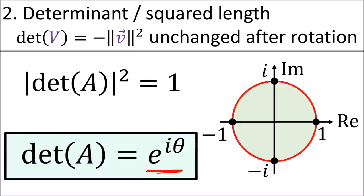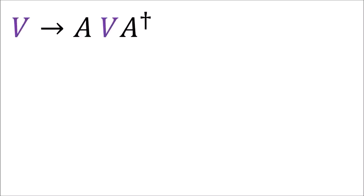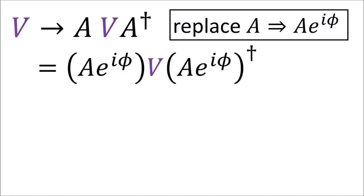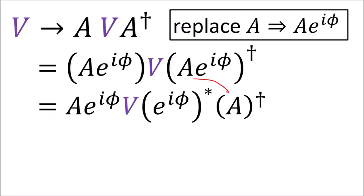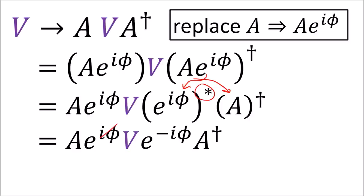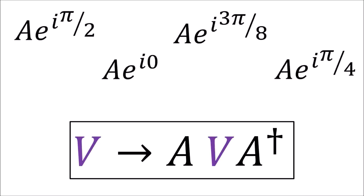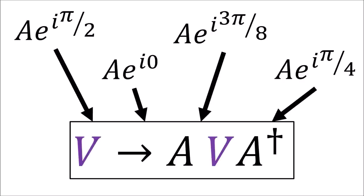This means that the determinant of A can be any complex number with magnitude 1, meaning it's a complex number on the unit circle of the form e^(i theta). However, there's an important detail we need to pay attention to with double-sided transformations. Let's try replacing our matrix A with A times a complex phase. The phase on the right will get complex conjugated because of the Hermitian conjugate, causing it to cancel with the phase on the left. The resulting transformation is the exact same as before we multiplied by the phase.